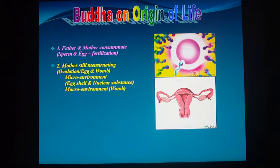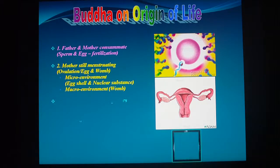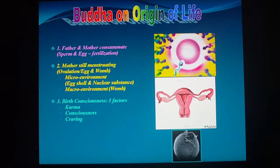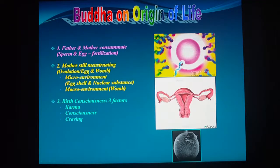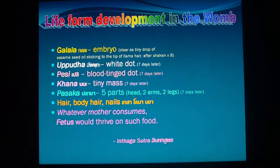The macroenvironment is the womb — a nest for the fertilized egg to grow in as a baby. The third part needed is birth consciousness, which depends on three factors: prior karma, consciousness, and craving — the decision to be born with that desire. So it is the fertilized egg. This appears in the Maha Tanha Sankhaya Sutta.